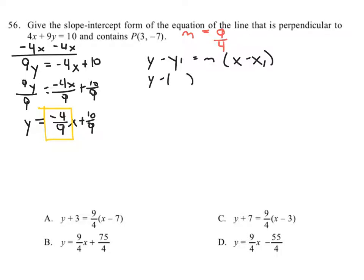And so we say y minus the y coordinate that they gave us—the y coordinate was negative 7—equals m, the slope that we just figured out we need to use, 9 fourths, because that's the opposite reciprocal of the slope they gave us.